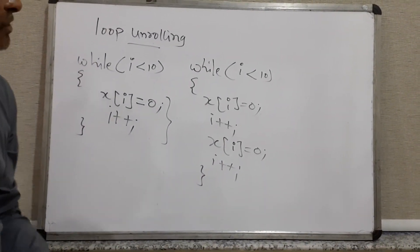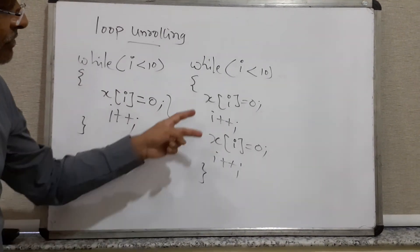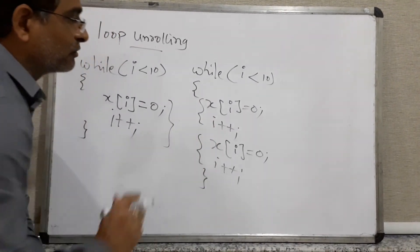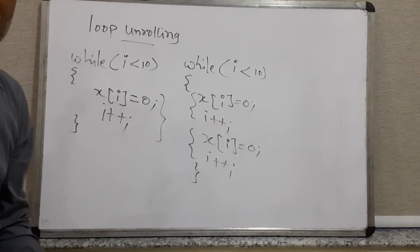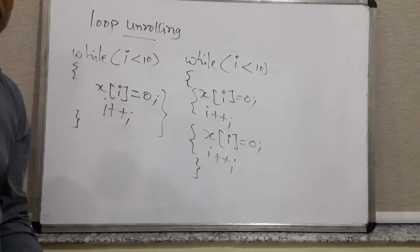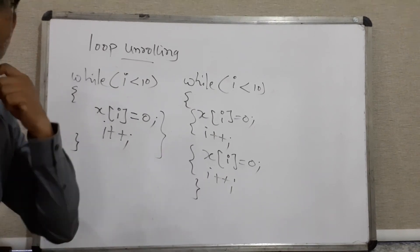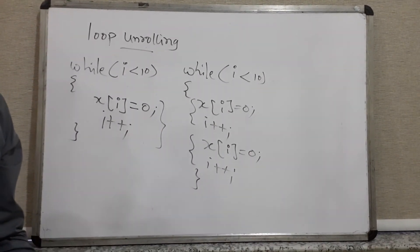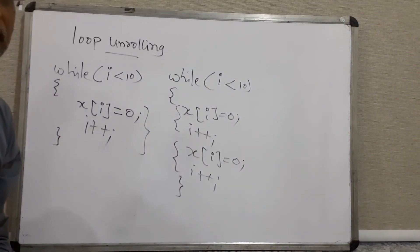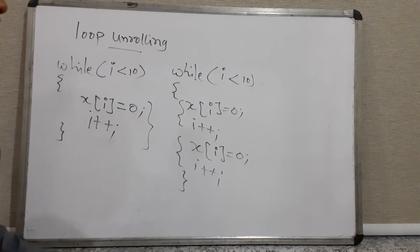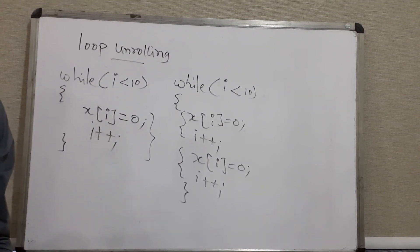With this group-of-two duplication, the comparison is done only 5 times instead of 10. However, if we try a group of three, it won't work properly because 3 does not divide 10 evenly — three times three is nine, so one condition would not be satisfied. But if we duplicate the code five times, the comparison is done only twice, and it works correctly. This is the concept behind loop unrolling.